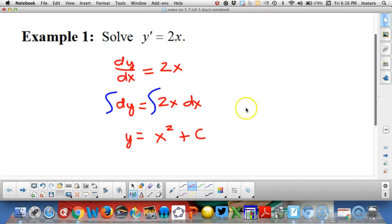We could make specific solutions by just choosing a number for c. For example, y equals x squared plus 5 would be a specific solution to this differential equation. Notice that if I take the derivative of y equals x squared plus 5 I will get 2x.